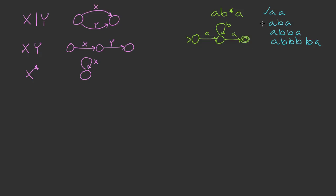Let's verify this works. For the string AA, we start at the starting state, follow one edge for A, then follow another edge for the final A, and end up in our accepting state. For ABA, we start at the starting state, follow the first edge for A, then follow the loop for B, and follow the next edge for A — we end up in our accepting state. Similarly, ABBA works by following the loop twice for the two B's, and it also works for four B's in a row.